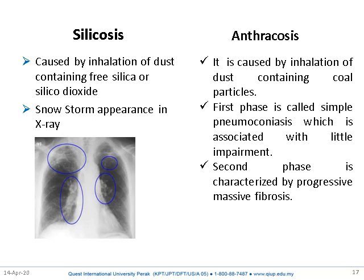Silicosis is caused by inhalation of dust containing free silica or silicon dioxide. A snowstorm appearance on X-ray is characteristic. Another name for silicosis is silicotuberculosis, because the X-ray of a silicosis patient looks similar to that of a tuberculosis patient.